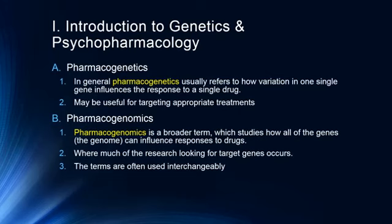We'll talk about people who are poor metabolizers or ultra-rapid metabolizers of drugs because they have alterations in the proteins that create cytochrome P2D6, one of those cytochrome P450 enzymes that break down or metabolize certain drugs. We'll also spend some time talking about epigenetics of drug abuse, and you've just been introduced to how epigenetics works.